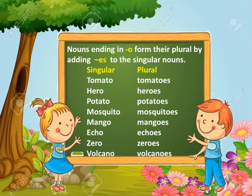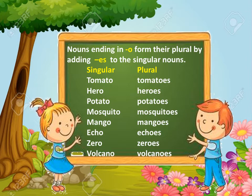Nouns ending in O form their plural by adding ES to the singular nouns. Here are some of them: tomato → tomatoes, hero → heroes, potato → potatoes, mosquito → mosquitoes, mango → mangoes, echo → echoes, zero → zeros, volcano → volcanoes.